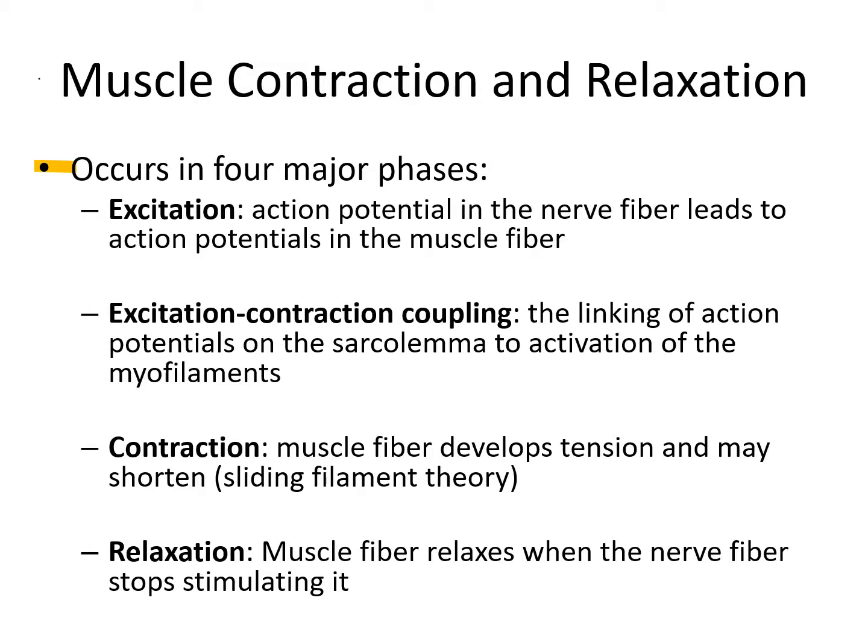Muscle contraction and relaxation occurs in four major phases. Excitation is where action potentials originate within the nerve fiber — this is a somatic motor neuron found within the body, affecting motor output and having a connection to an effector organ, in this case a skeletal muscle. An action potential within that nerve fiber leads to action potentials within the muscle fiber. A muscle must be innervated by a nerve in order to contract. That's excitation.